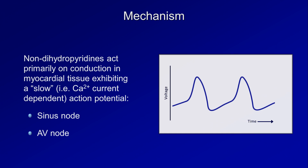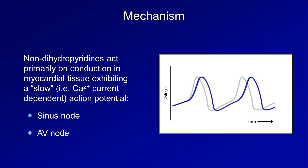They act primarily on the conduction in myocardial tissue, exhibiting the slow response action potential. This is the one that is dependent upon calcium current for depolarization, and is seen in the sinus and AV nodes. Since depolarization in these cells is dependent upon an inward movement of calcium ions, calcium channel blockers slow the action potential upstroke. As the action potential gets slowed, this results in increasing the time until the next spontaneous depolarization.